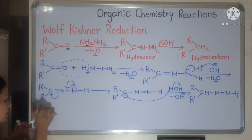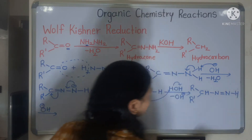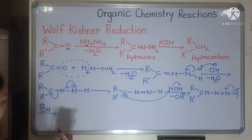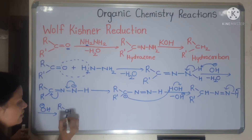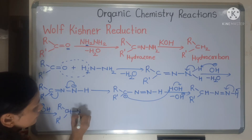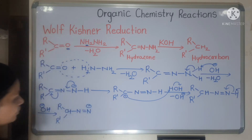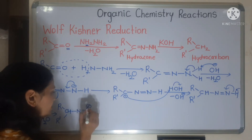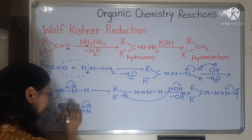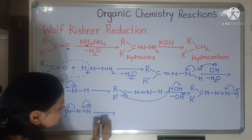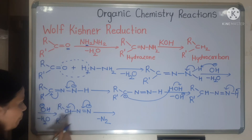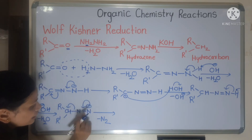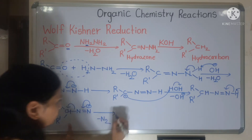We add alkali again. OH⁻ attacks the hydrogen on nitrogen — that hydrogen leaves, the bond shifts, and nitrogen becomes negative again. The negative charge shifts to carbon, making carbon negative. Since carbon is negative, N2 is eliminated as a gas. The species becomes R-CH⁻, with the triple bond breaking to give the carbanion.